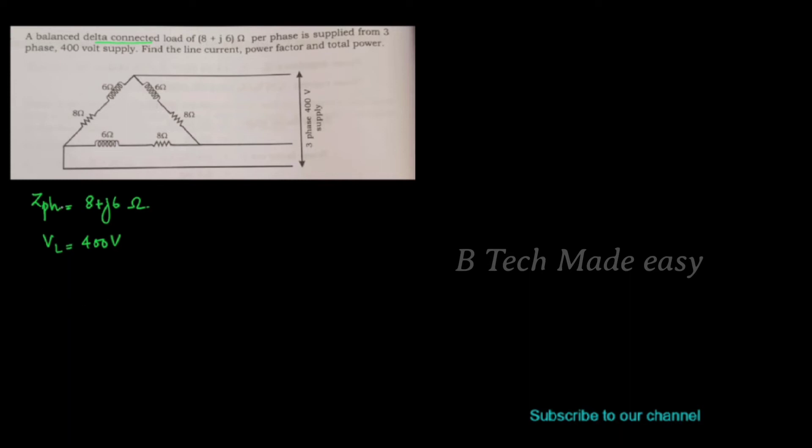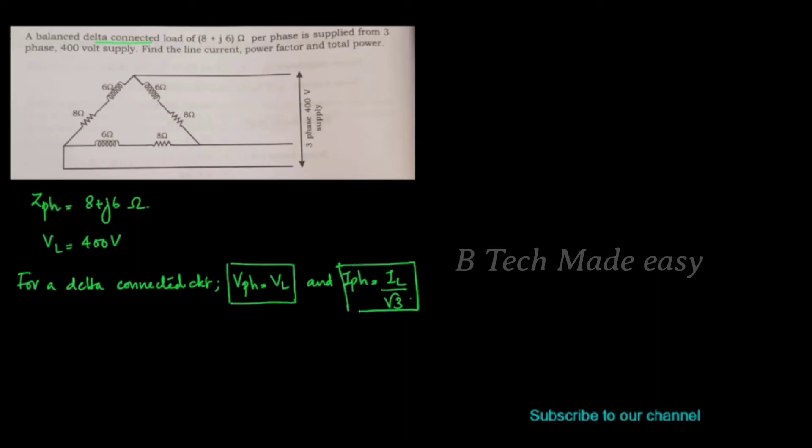In a delta-connected circuit, Vph is equal to VL, and Iph is equal to IL divided by root 3.